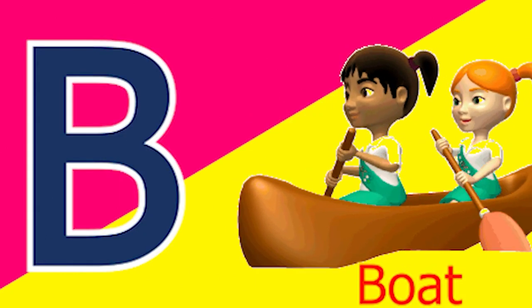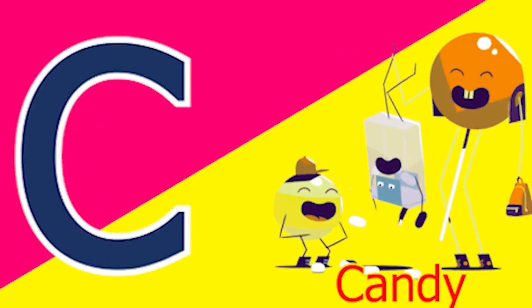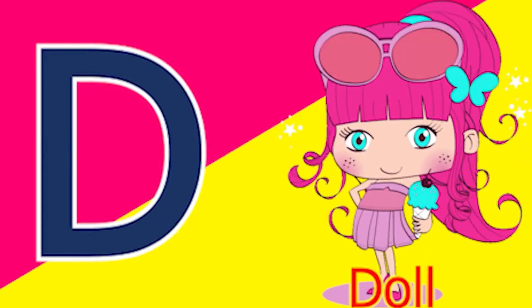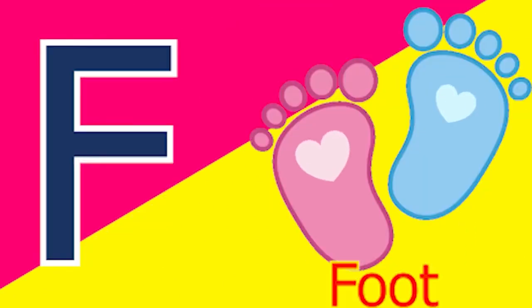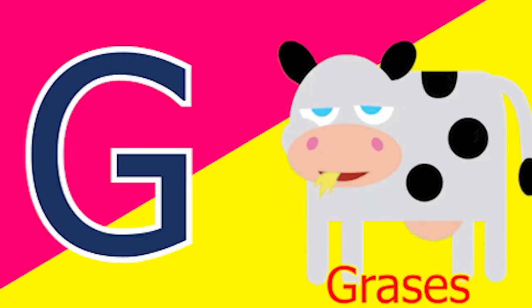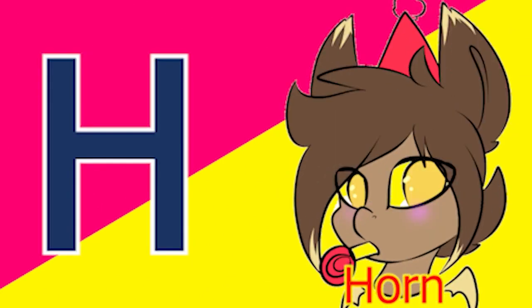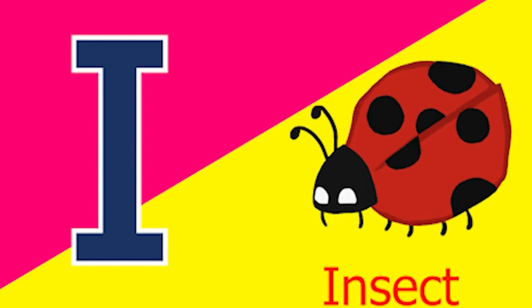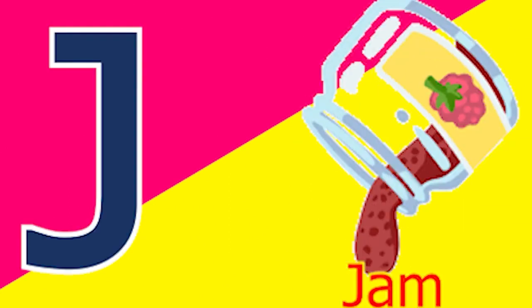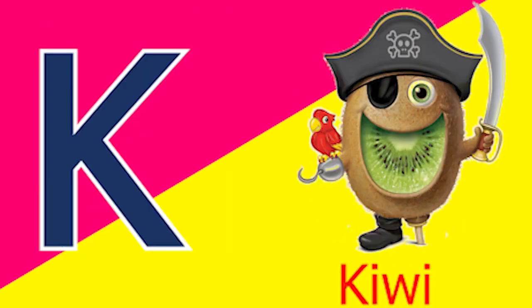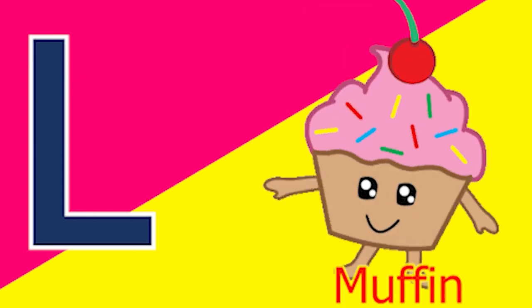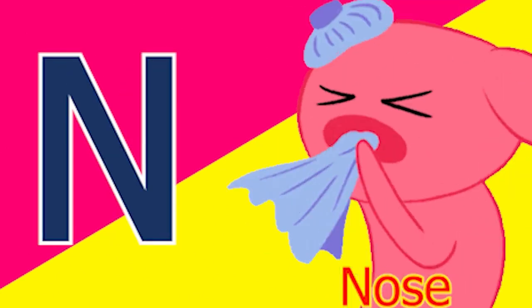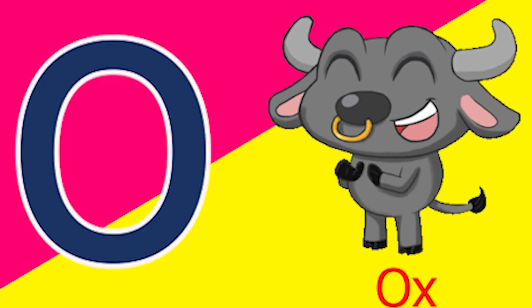A for aeroplane, B for boat, C for candy, D for doll, E for elbow, F for foot, G for glass, H for horn, I for insect, J for jam, K for kiwi, L for lamb, M for mud, N for nose, O for ox.